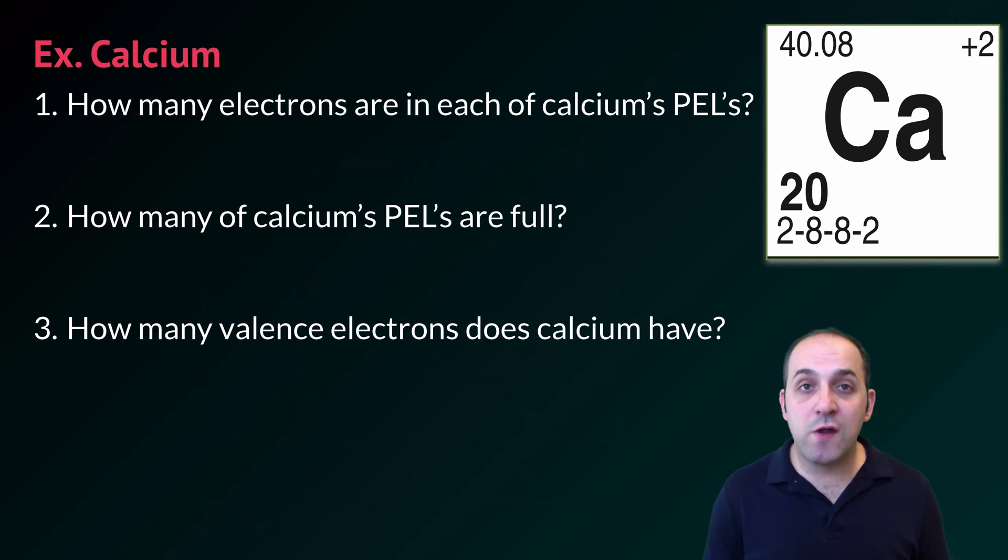Basic electron configuration is given to us on our periodic table. Using the key you'll see it's in the bottom left corner of every element entry in the periodic table. For calcium for instance it's 2-8-8-2 and using this electron configuration we can get a lot of information about calcium's electrons.